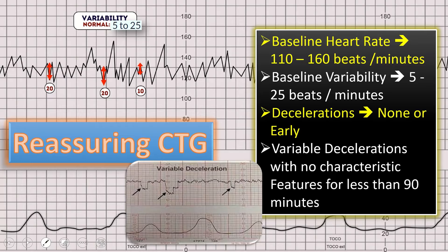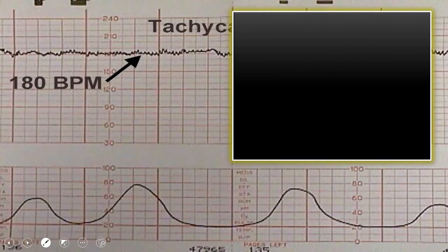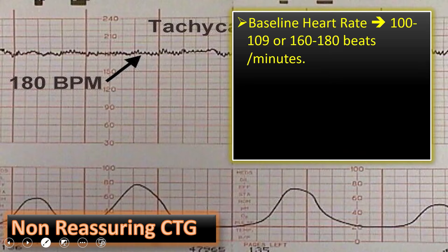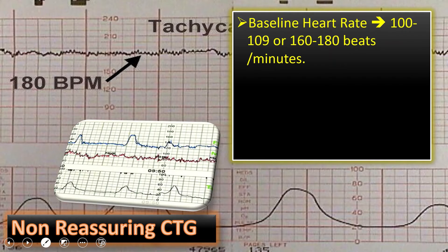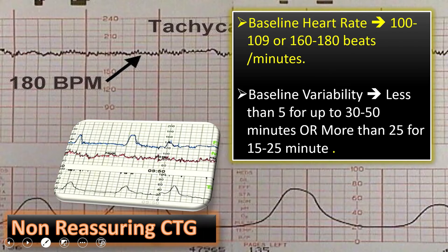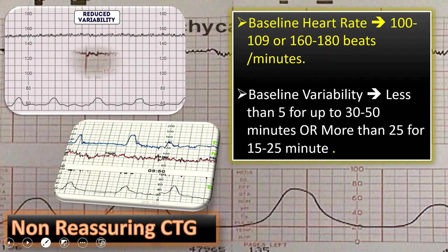In non-reassuring CTG, the baseline fetal heart rate lies in the range of either 100 to 109 or 160 to 180 beats per minute. Here you can see tachycardia — fetal heart rate of more than 160 — and here the fetal heart rate is in the range of 100 to 109. Regarding baseline variability, if it is less than 5 for up to 30 to 50 minutes, or more than 25 for 15 to 25 minutes, that is also a non-reassuring sign.